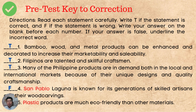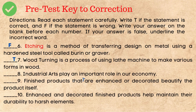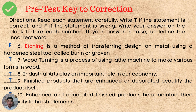Number 3: Many of the Philippine products are in demand both in the local and international markets because of their unique designs and quality craftsmanship. Number 3 — True. Number 4: San Pablo, Laguna is known for its generation of skilled artisans and their wood carvings. The answer is F — it is Paete, Laguna. Number 5: Plastic products are much eco-friendly than other materials. Letter F — it's wood products. Number 6: Etching is a method of transferring design on metal using a hardened steel tool called burin or graver. The answer is F — it's engraving.